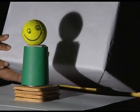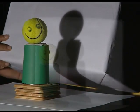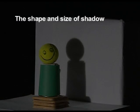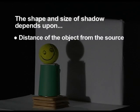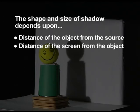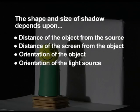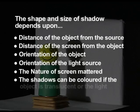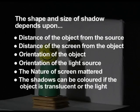From the activities, we learnt about the formation of shadows. We saw that the shape and size of the shadow depends upon the distance of the object from the source, the distance of the screen from the object, the orientation of the object, and the orientation of the light source. We also saw that the nature of the screen mattered, and that shadows can be colored if the object is translucent or if the light source is colored.